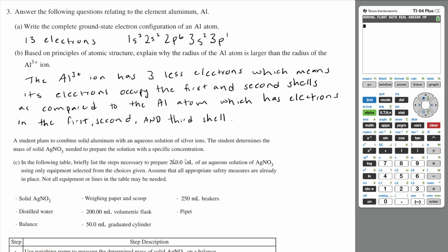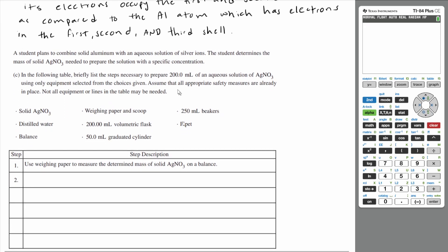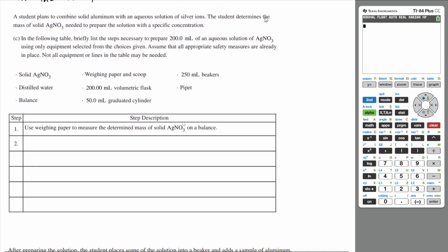So the aluminum 3+ ion has three less electrons, which means its electrons occupy the first and second shells as compared to the aluminum atom, which has electrons in the first, second, and third shell. All right, let's go on to C. A student plans to combine solid aluminum with an aqueous solution of silver ions. The student determines the mass of solid silver nitrate needed to prepare the solution with a specific concentration. In the following table, briefly list the steps necessary to prepare 200 mL of an aqueous solution of silver nitrate using only equipment selected from the choices given.